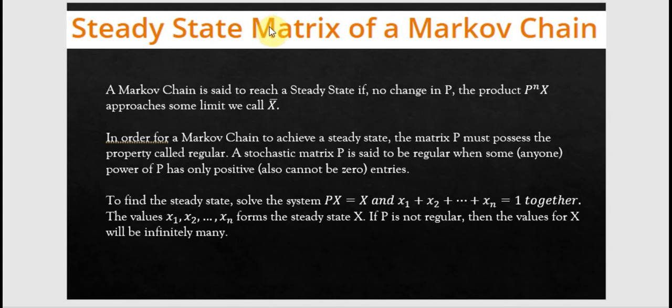The steady state matrix of a Markov chain. We look at the possibility that after you keep running the iterations of the Markov chains, is it possible to reach a limit? If that is the case, then that limit is said to be the steady state. A Markov chain is said to reach steady state if, with no change in p, the product p^n times x approaches some limit we call x-hat. In order for a Markov chain to achieve a steady state, the matrix p must possess the property called regular.